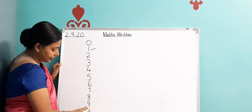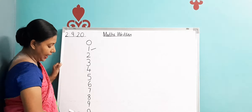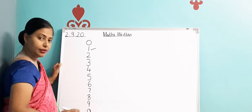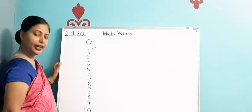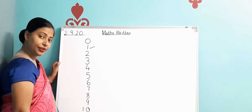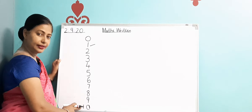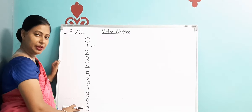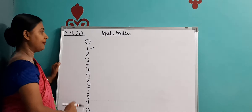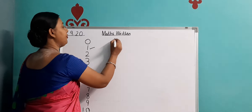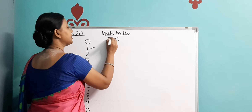Now after 9, again 0 comes. And 0 means nothing. So after 9 we put 1 over here. Now it has become which number? It has become number 10 — 1, 0, ten. This has become number 10. Remember: this is a single digit number, and whenever we write a single digit number, we have a 1's column and a 10's column.